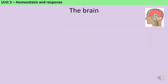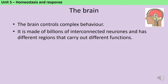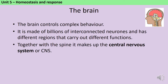The brain is the organ responsible for controlling complex behaviour. It's made up of billions of interconnected neurons, and it has different regions that each carry out different functions. Together with the spine, the brain makes up the central nervous system, or CNS.